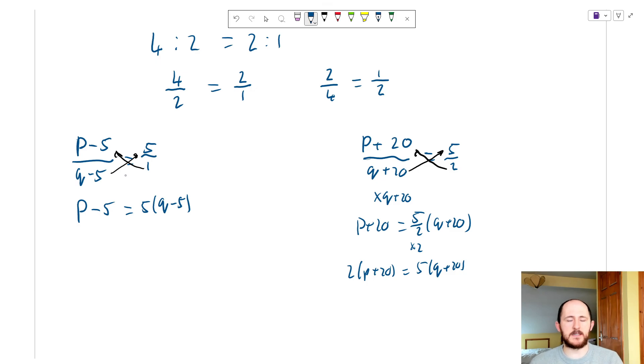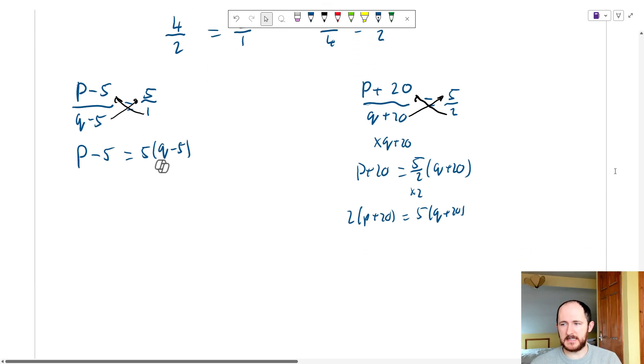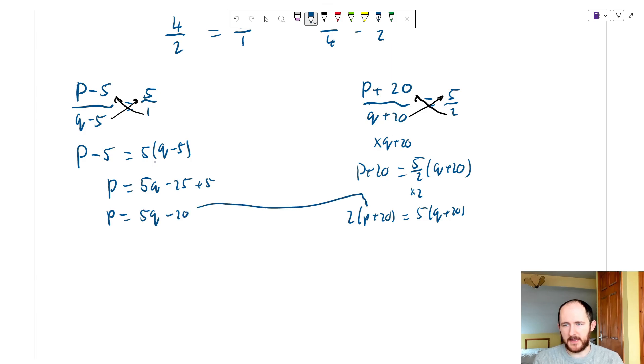Now all I need to do is rearrange one of these equations for p or q and sub it into the other. If we just move the 5 over, if I expand those brackets I get 5q minus 25 then plus 5. So p is just equal to 5q minus 20. Then sub this in for p over here.